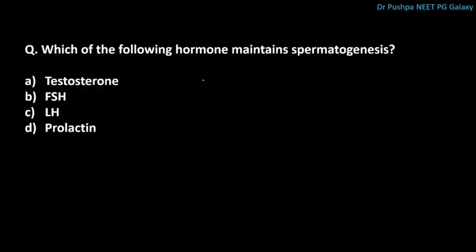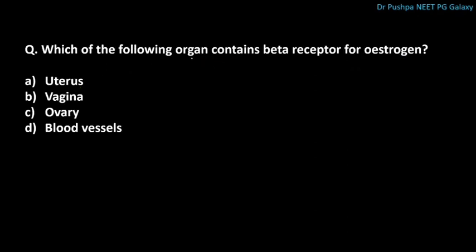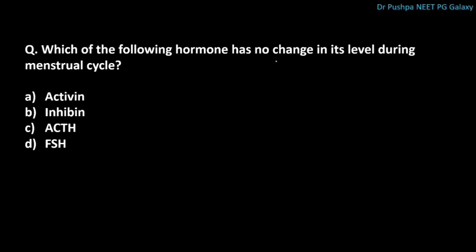Which hormone maintains spermatogenesis? The correct answer is testosterone. After how many days of ovulation does the corpus luteum start regressing? The correct answer is 5 days. Which organ contains beta receptors for estrogen? The correct answer is the uterus. Which hormone has no change in its level during the menstrual cycle? The correct answer is activin.